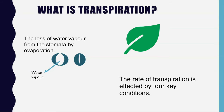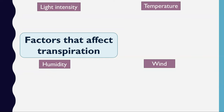Next we look at the four key conditions which affect the rate of transpiration. The four are: light intensity, temperature, humidity, and wind. Pause the video at this stage to see if you can describe the effects each of those conditions would have on the rate of transpiration, and also explain why they have that effect.